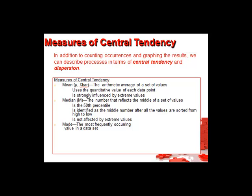Next we'll look at measures of central tendency. In addition to counting occurrences and graphing the results, we can describe processes in terms of central tendency and dispersion. The measures of central tendency are: the mean or X-bar, which is the arithmetic average of a set of values — it uses the quantitative value of each data point and is strongly influenced by extreme values; the median, which is the number that reflects the middle of a set of values, the 50th percentile, identified as the middle number after all values are sorted from high to low and not affected by extreme values; and the mode, which is the most frequently occurring value in a data set.